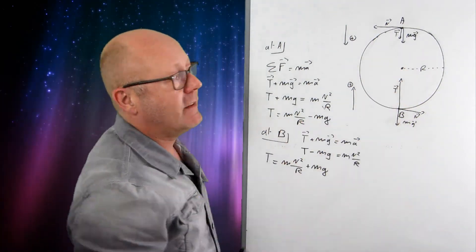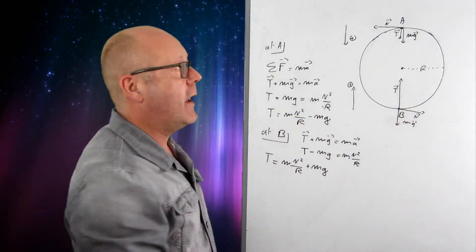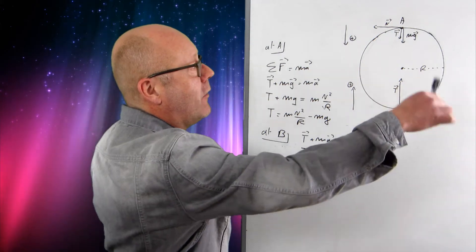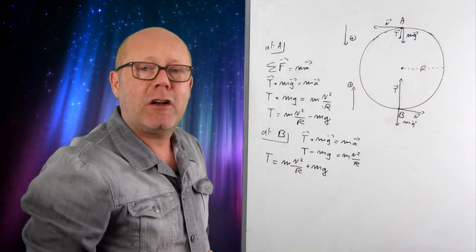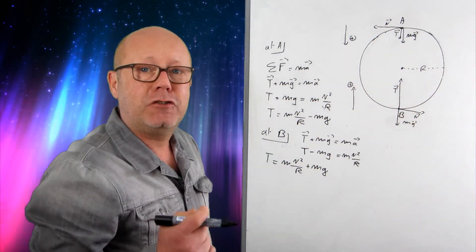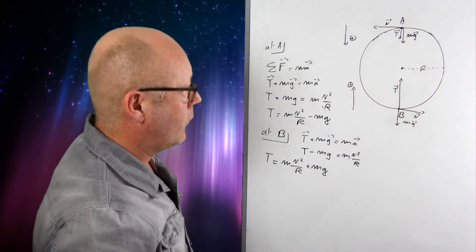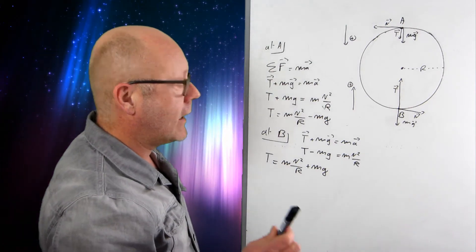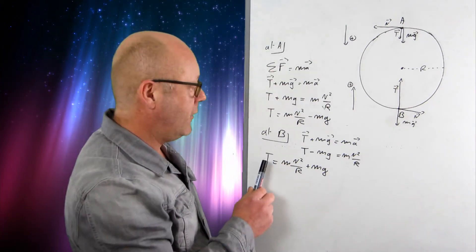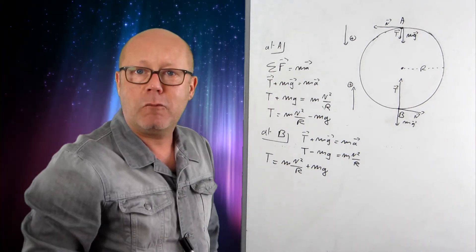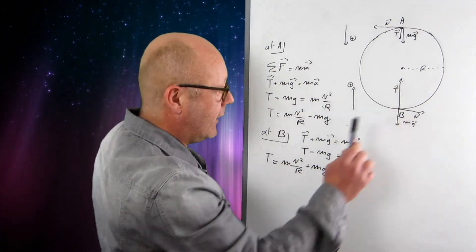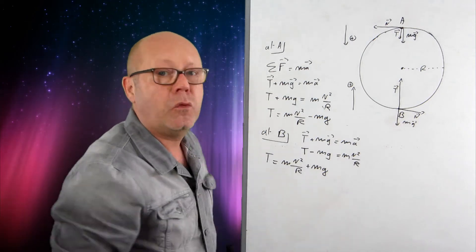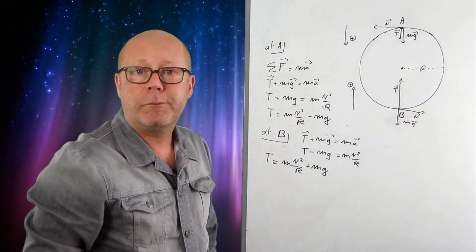Some test exercises ask you to find the linear velocity at which the string breaks, giving you the maximum tension before it breaks. In that case, it is the equation at B — where tension is greatest — that you would need to use.